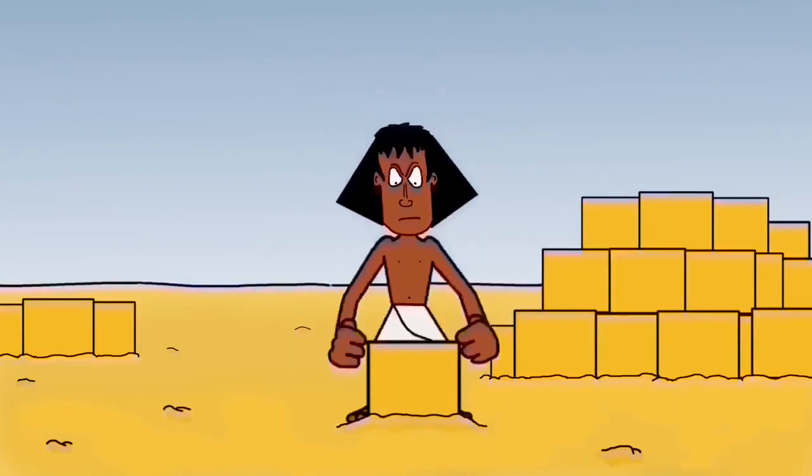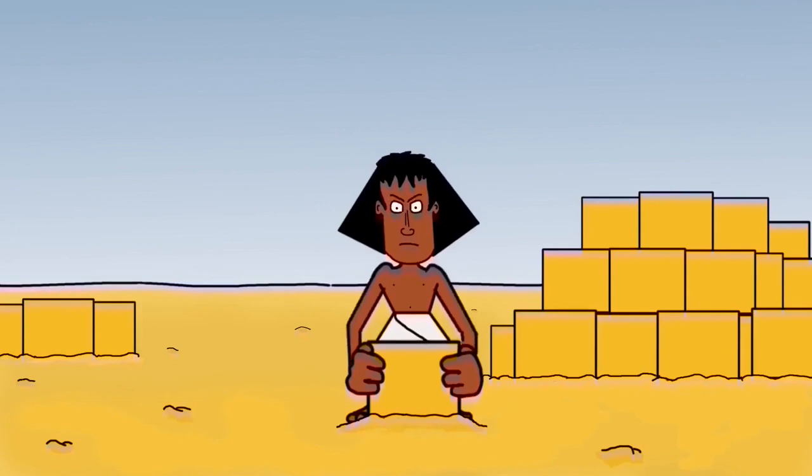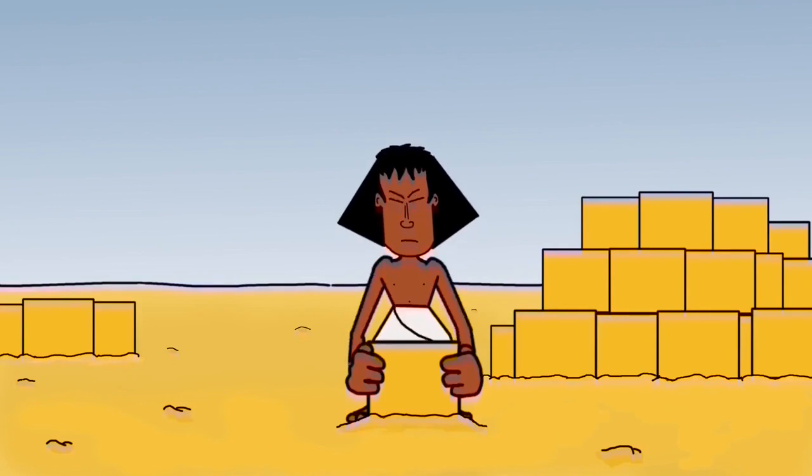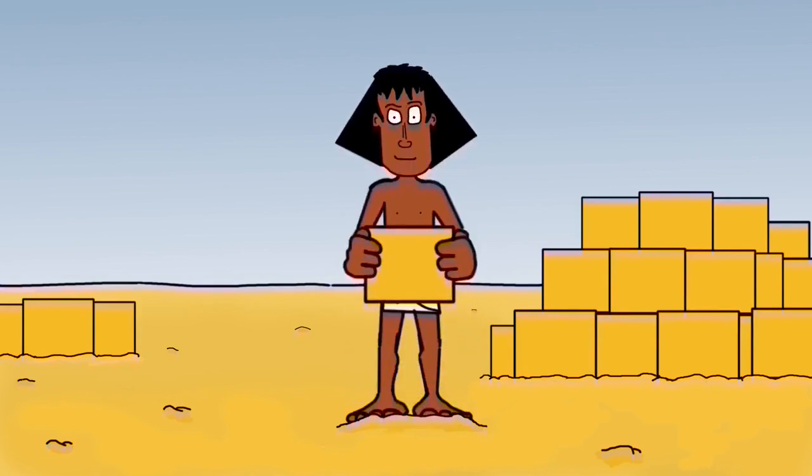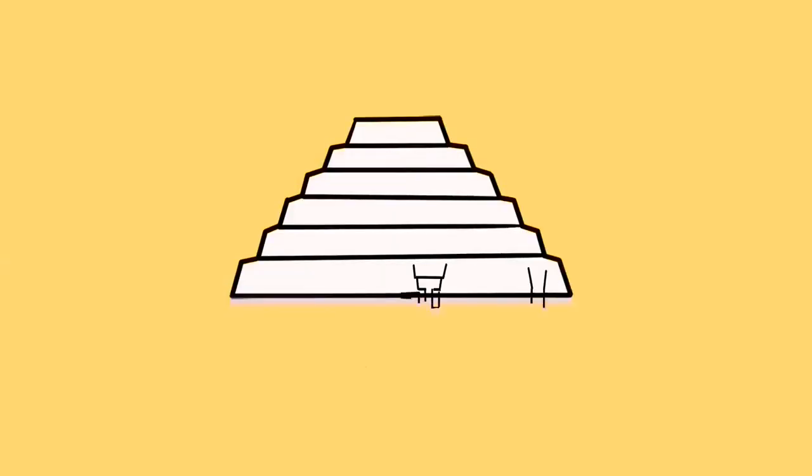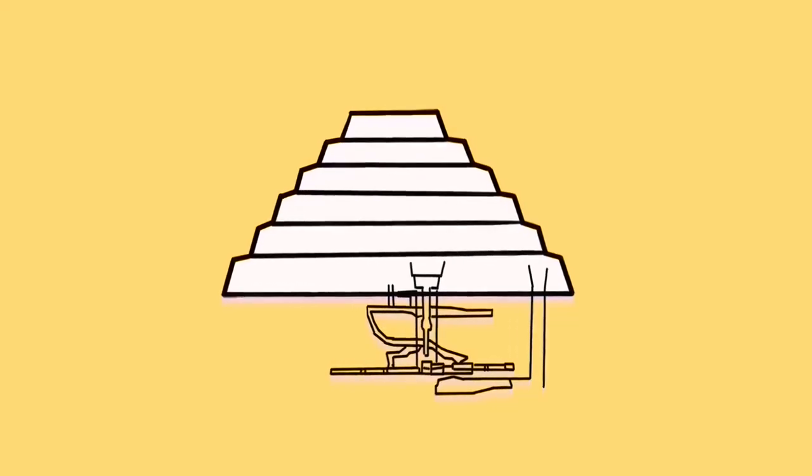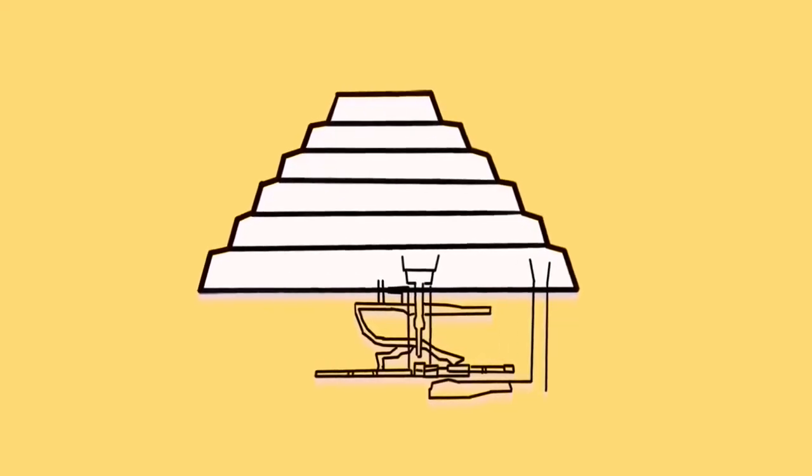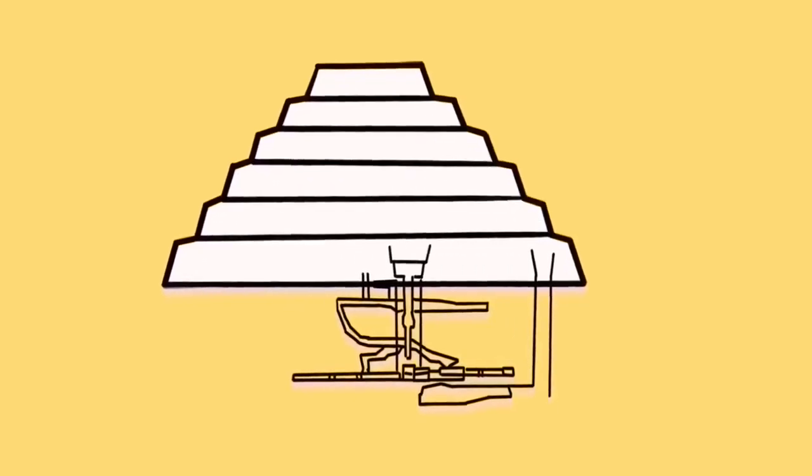Unlike later pyramids, the stone blocks used were modestly sized, which enabled each block to be carried by a single person. Underground, there was a series of corridors, rooms, and doors. Here was where Djoser's mummified body was laid to rest, along with provisions and items he chose to take with him into the afterlife.